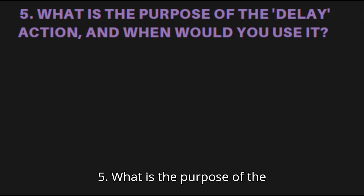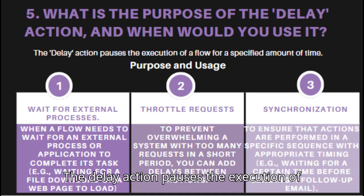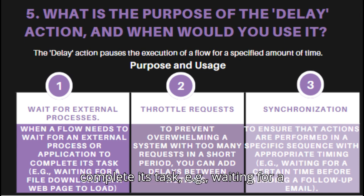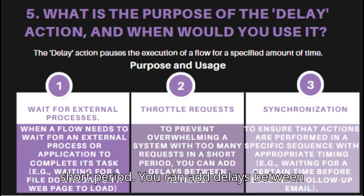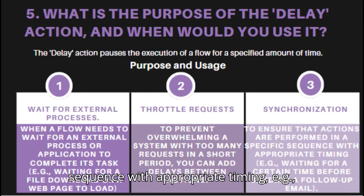Question 5: What is the purpose of the delay action and when would you use it? The delay action pauses the execution of a flow for a specified amount of time. It is used to wait for external processes when a flow needs to wait for an external process or application to complete, e.g., waiting for a file download or a web page to load. It can also throttle requests to prevent overwhelming a system with too many requests, or for synchronization to ensure actions are performed in a specific sequence, e.g., waiting before sending a follow-up email.